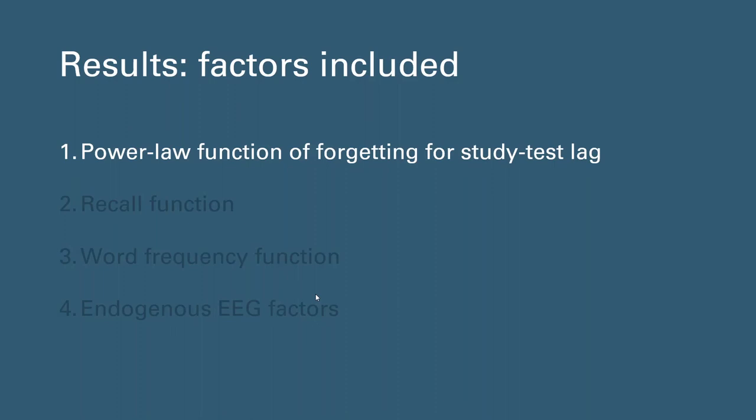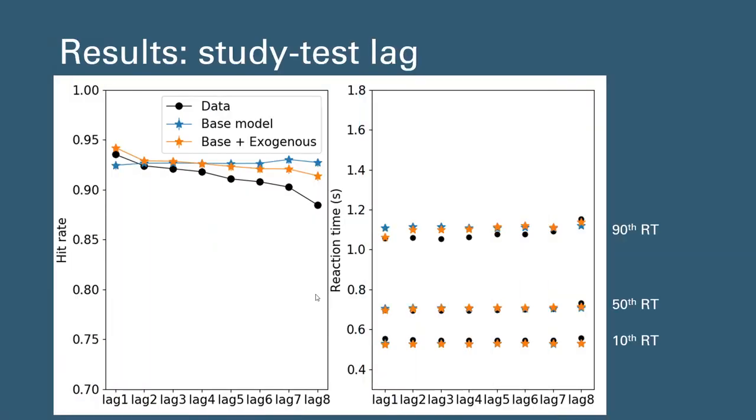First, checking whether the implementation of various factors helps improve model fit accordingly. For behavioral effects, we compare the model fit between the base model and the base model with exogenous factors. For the study-test lag effect, I divide up each factor into bins and check how model predictions match the performance in each bin. We can see that the data shows clear decrease in accuracy and increase in RT as study-test lag increases. Compared to the base model, our inclusion of study-test lag functions captures this trend of change.